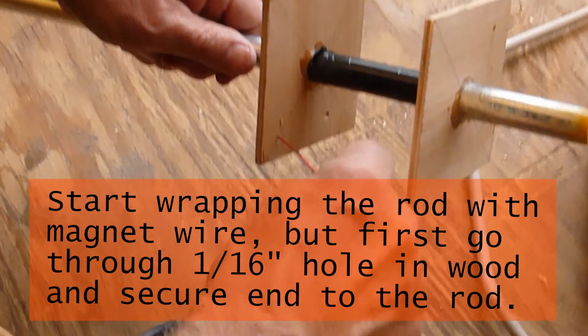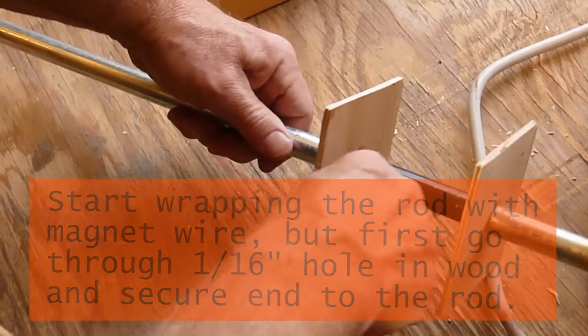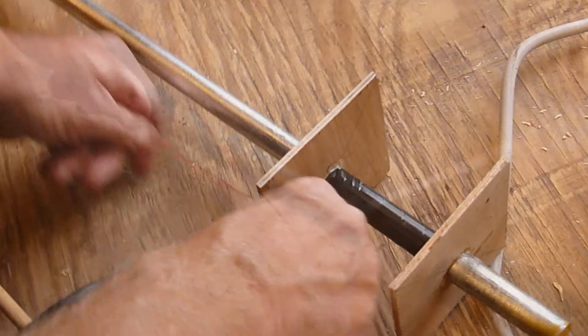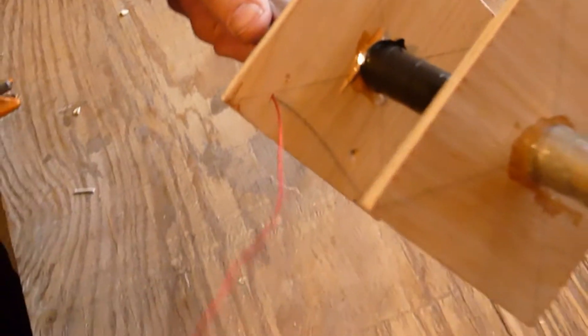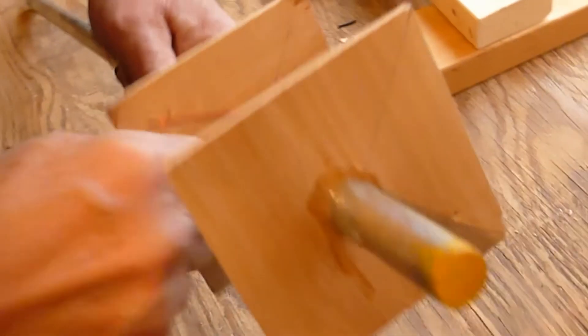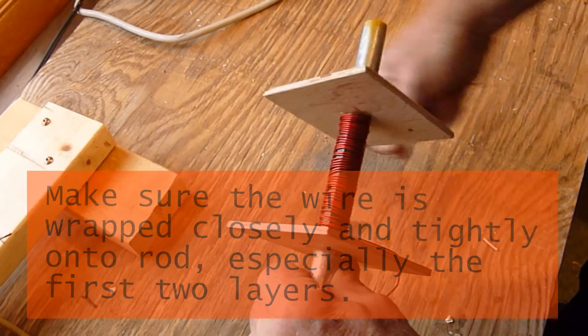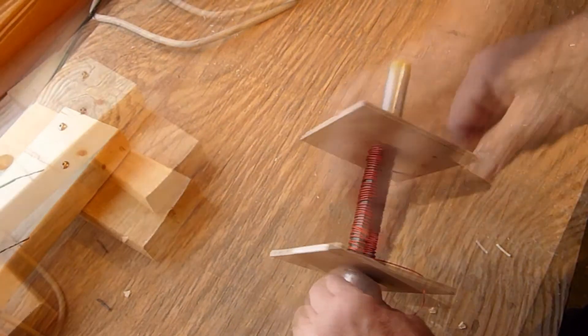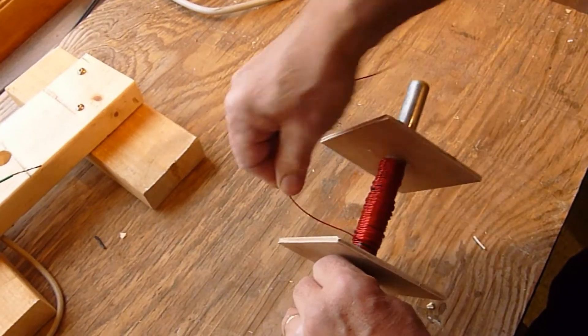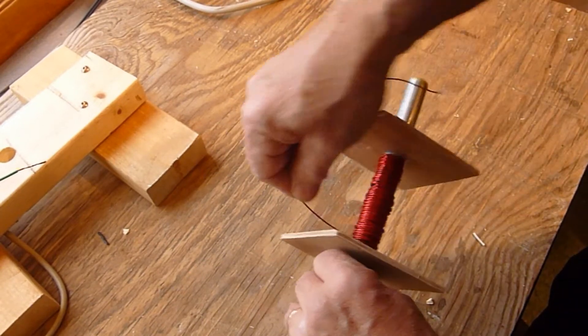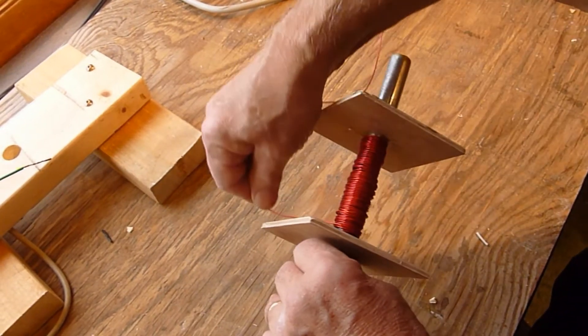Before wrapping the magnetic wire on the rod between the two pieces of plywood, put the end of the wire through one of the holes as shown and tape it to the rod. [Wrapping wire and counting turns]